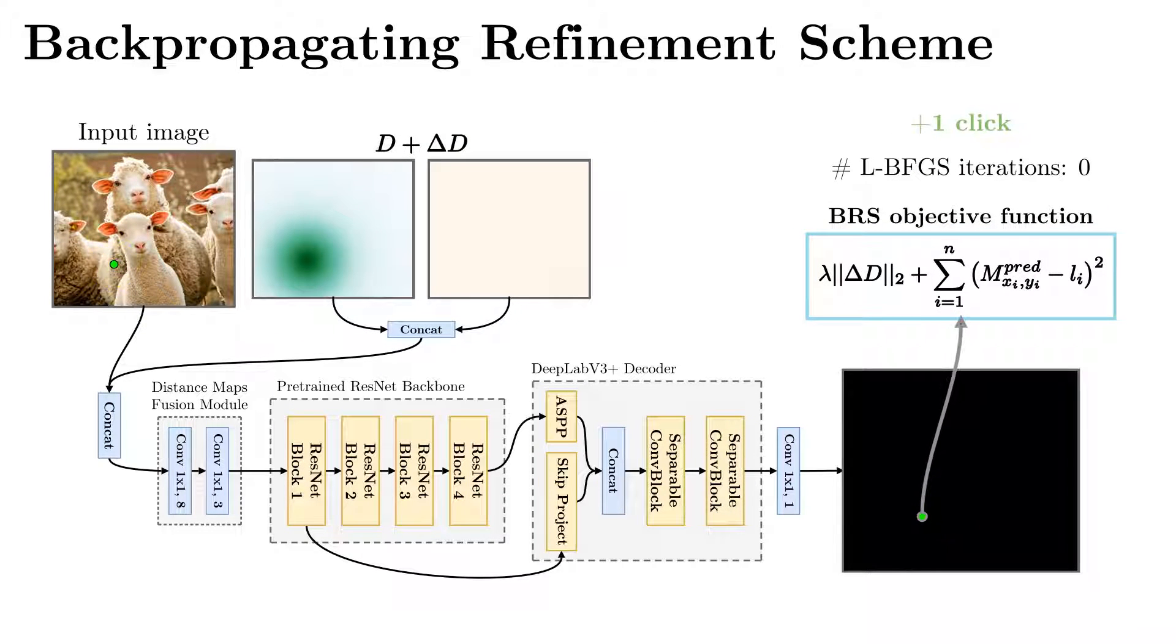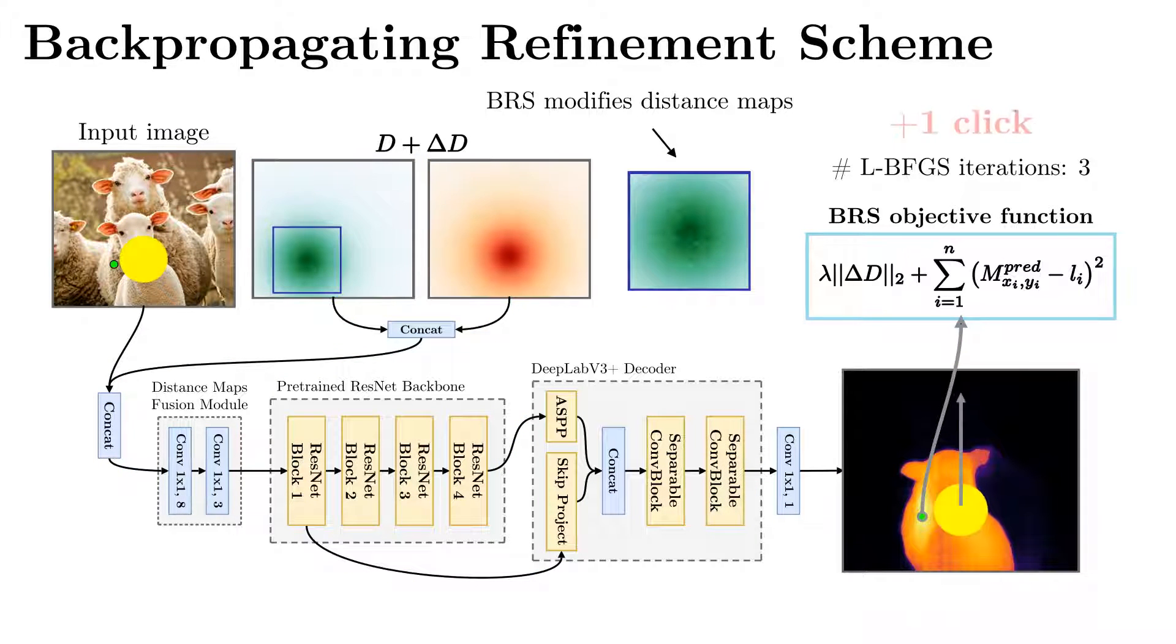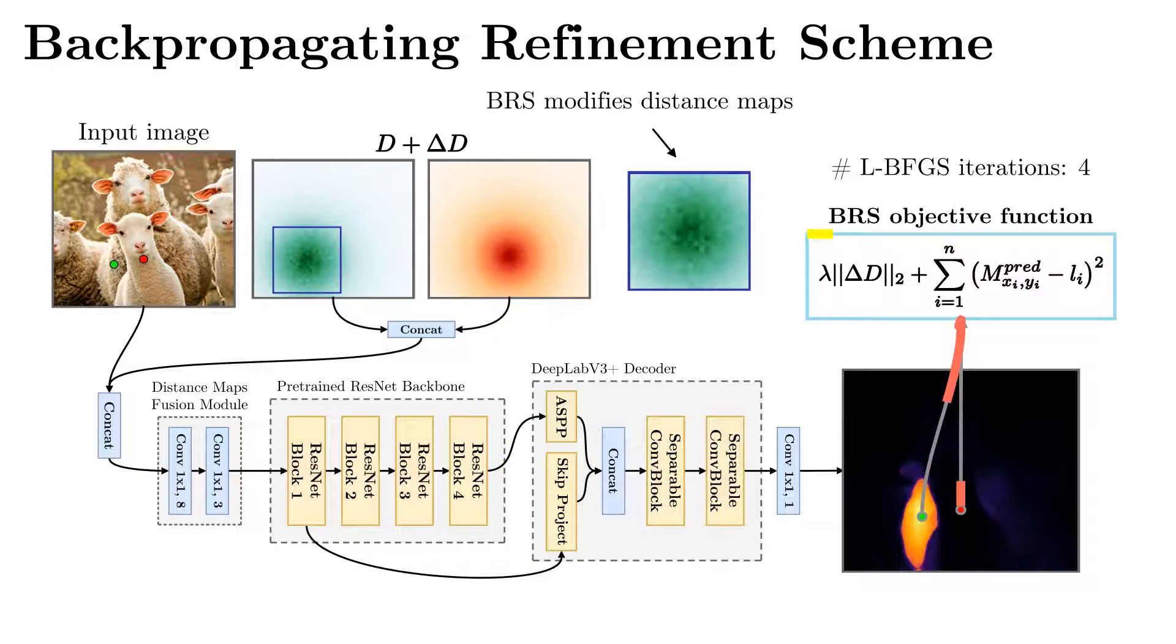On current scheme, BRS iterations are visualized. Green and red colors represent forward paths for positive and negative clicks, respectively. Blue color represents backward paths to the distance maps. While minimizing the objective function, BRS modifies distance maps so that network output would be consistent with user clicks. A zoomed distance map is shown in the blue frame.